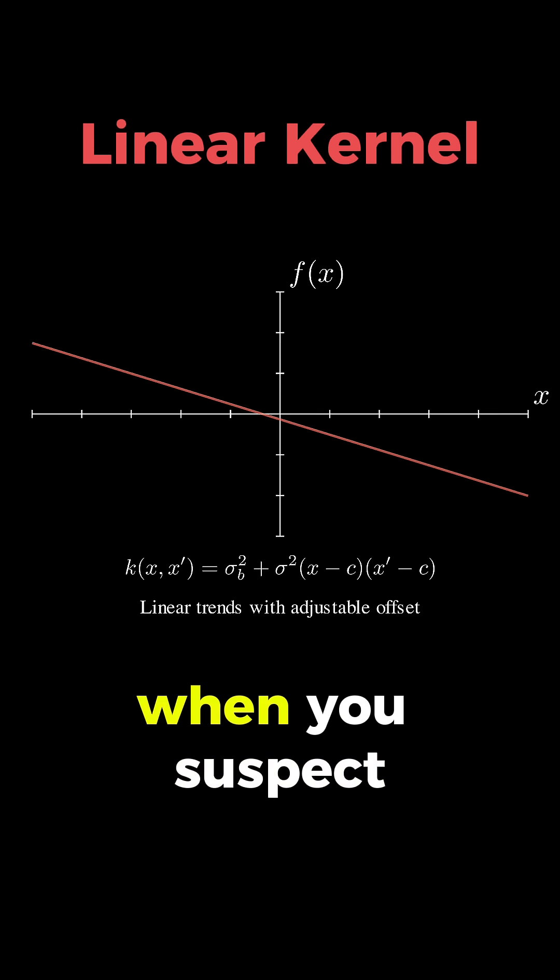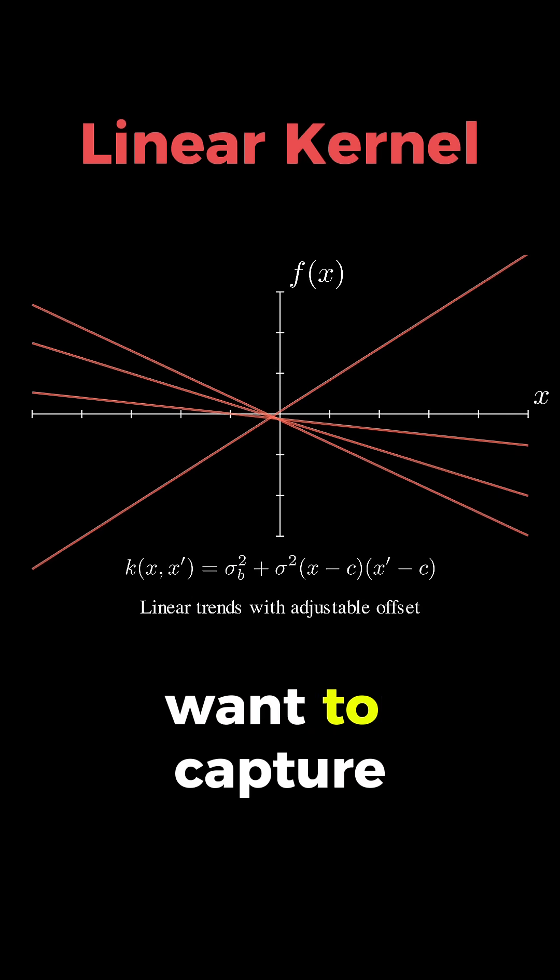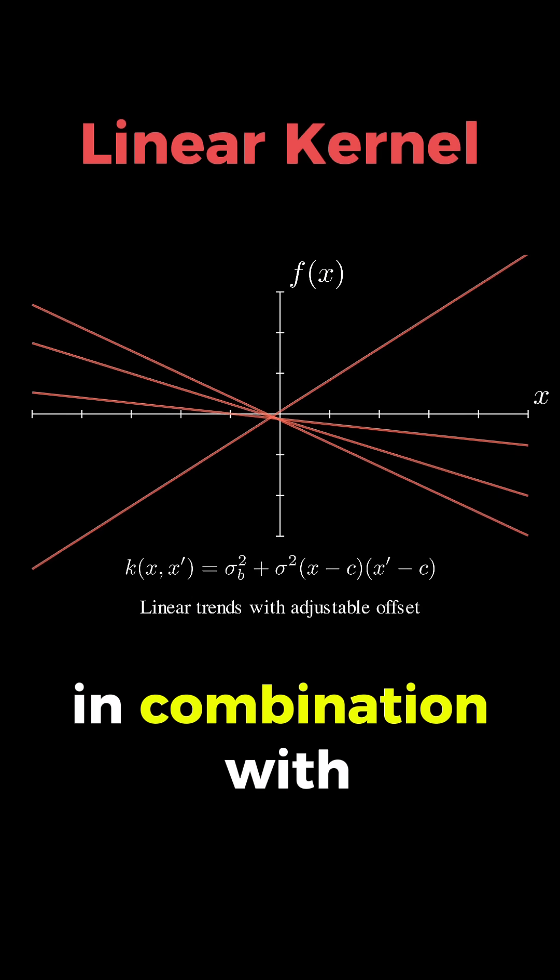This kernel is ideal when you suspect your data follows a linear trend or when you want to capture global trends in combination with other kernels.